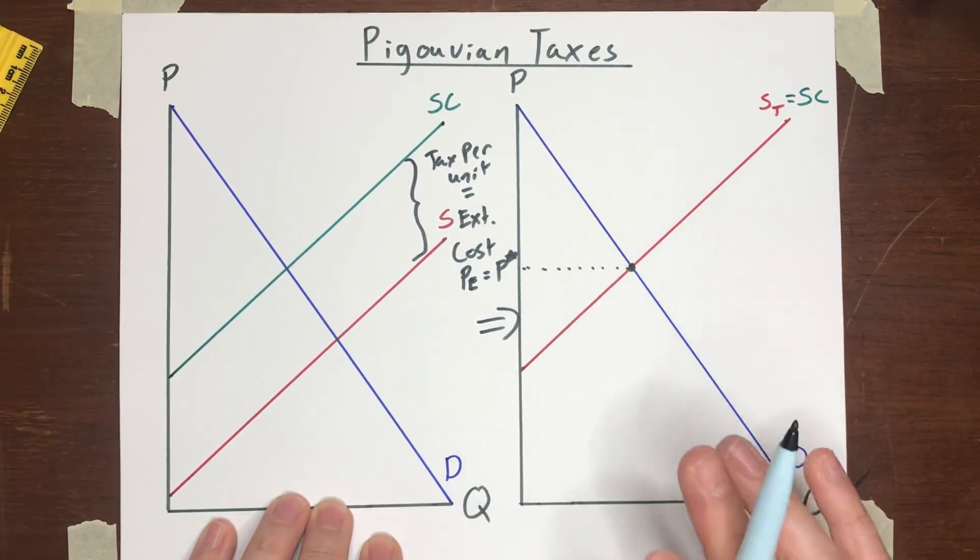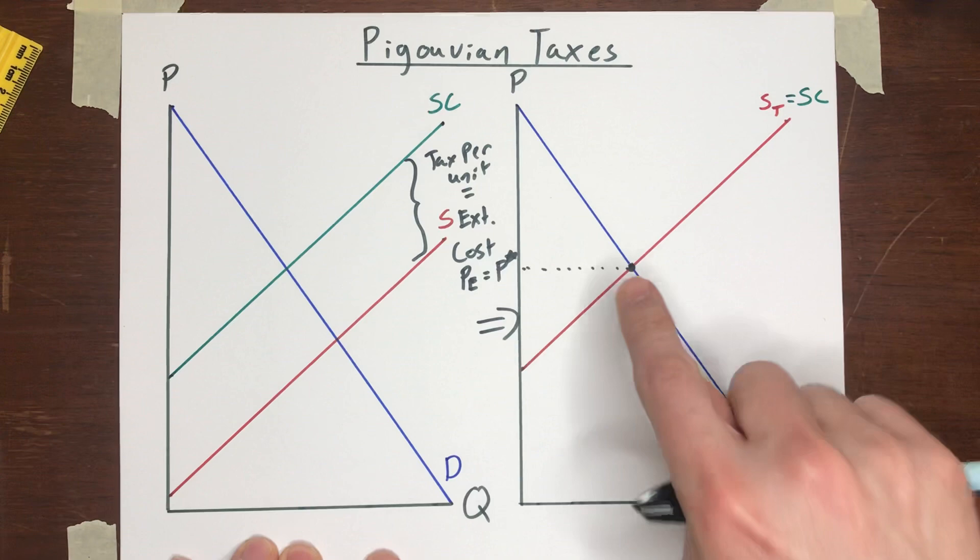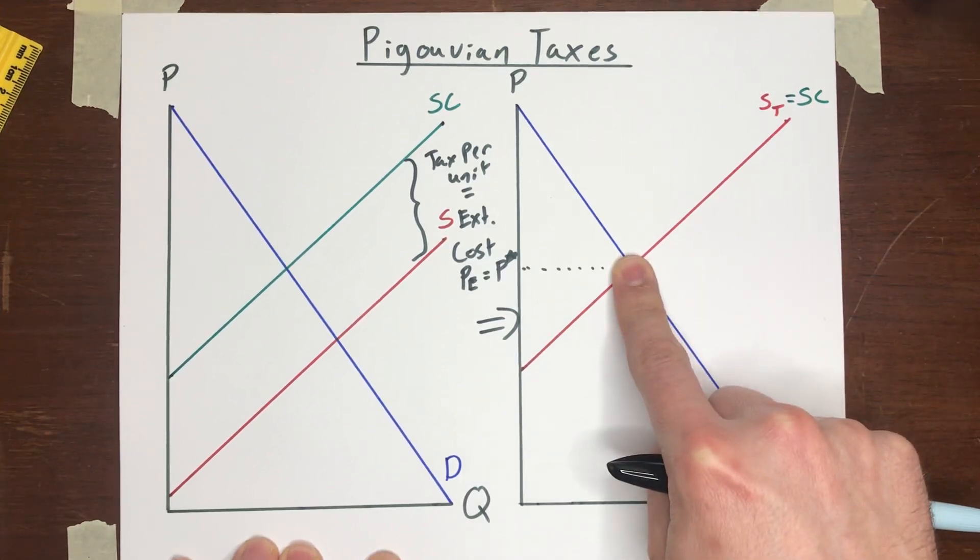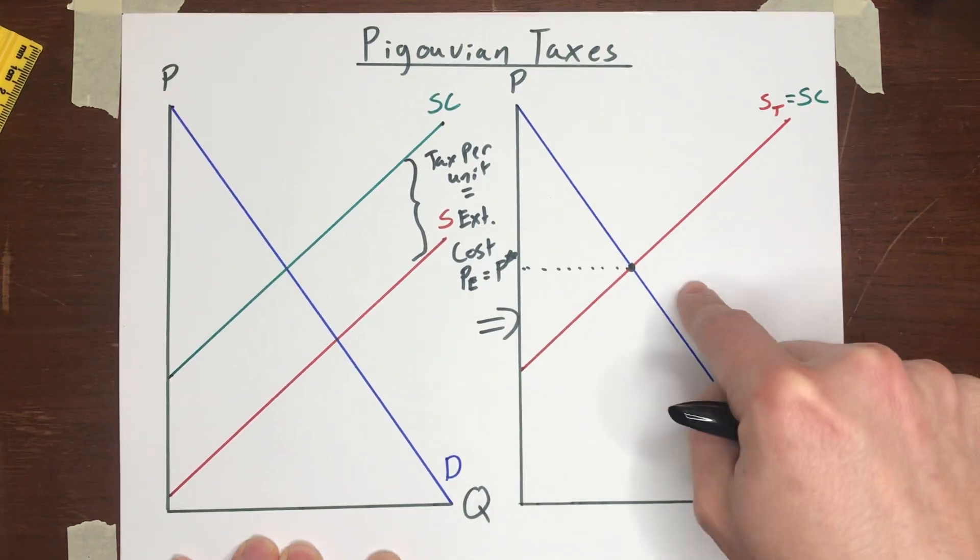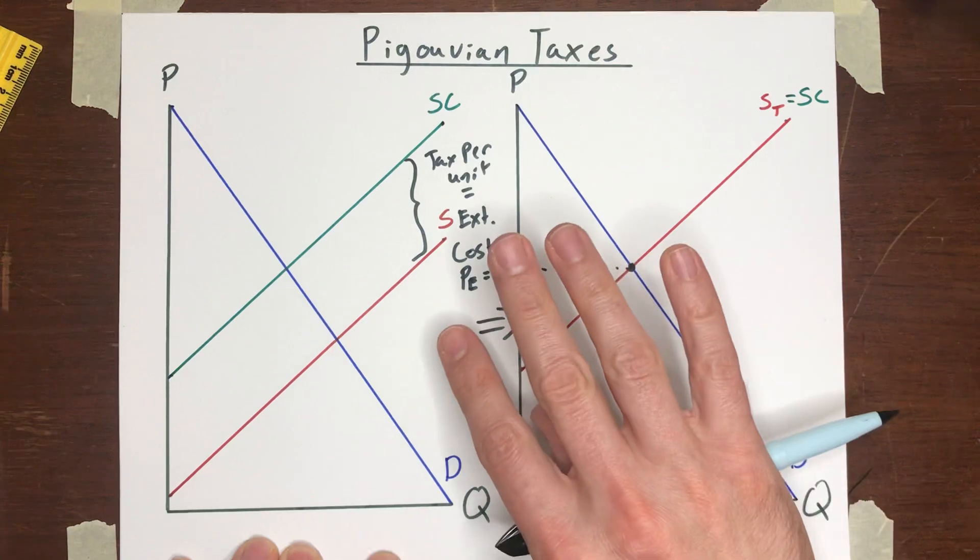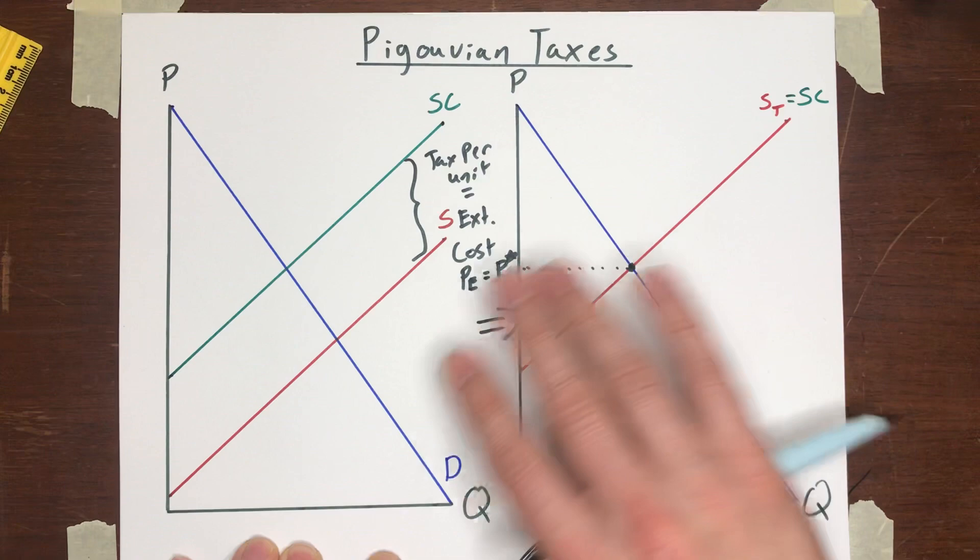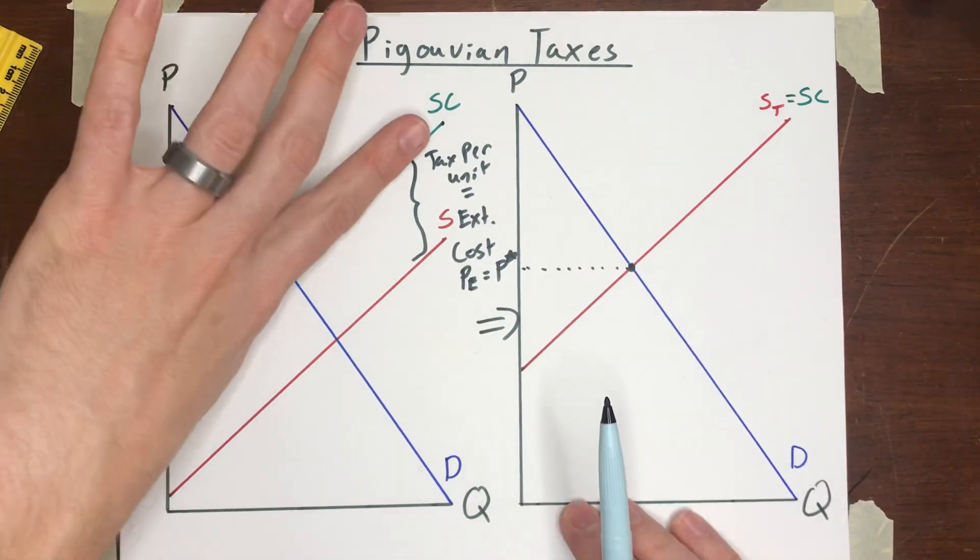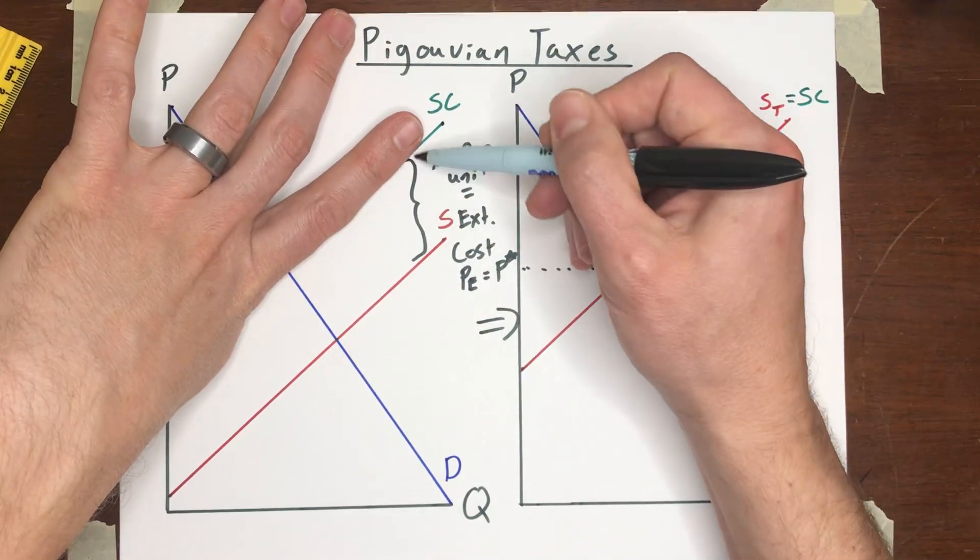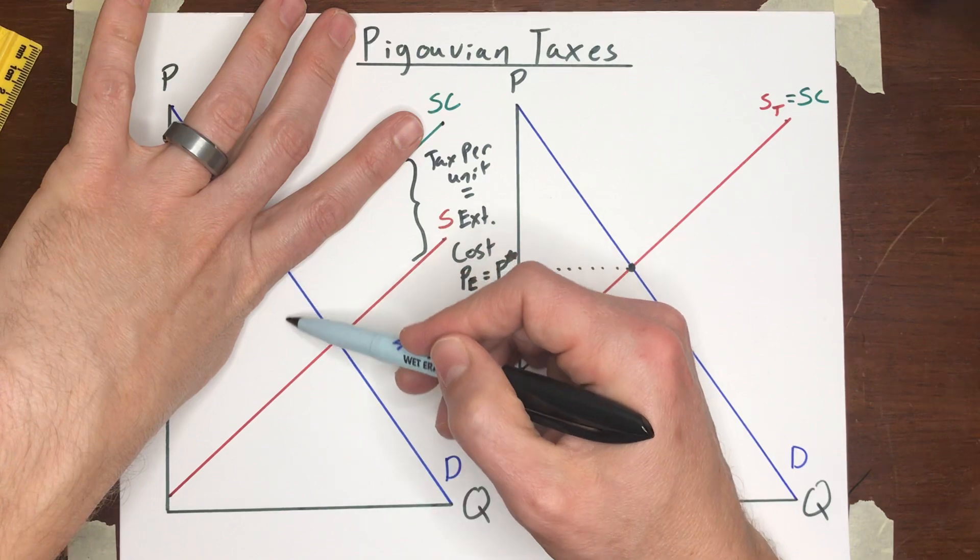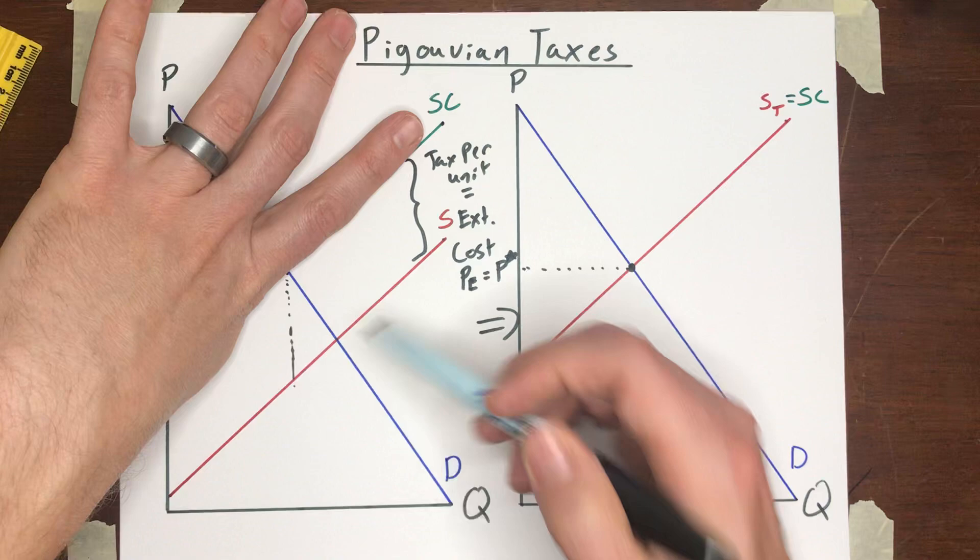Now, sometimes students are reluctant to think that there is no deadweight loss when you impose the Pigouvian tax, because they're used to thinking about taxes and subsidies in the context of chapter five, I believe, where there are no externalities. And remember, if there was no externality here and we imposed a tax that was the same distance, you would end up with a deadweight loss, right? It would be this area right here. This triangle would be a deadweight loss.